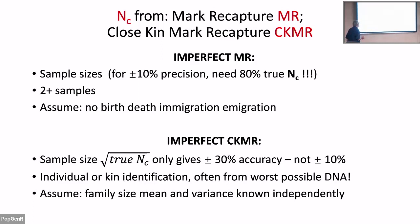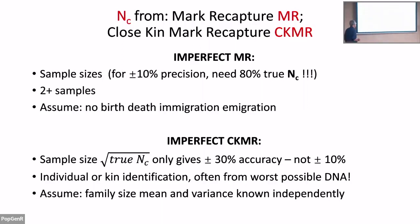That's why mark-recapture needed replacing. Mark Bravington came up with the elegantly designed close-kin mark-recapture: a sample size of the square root of the true census size, which is usually much smaller, but it only gives plus-or-minus 30% accuracy — not the 10% we're aiming for. It needs individual or kin identification, often from very poor-quality DNA — rotten samples from a tiny hair on tape against a tree. It also assumes you know the mean and variance of family size from independent data, not from the genetic data itself.